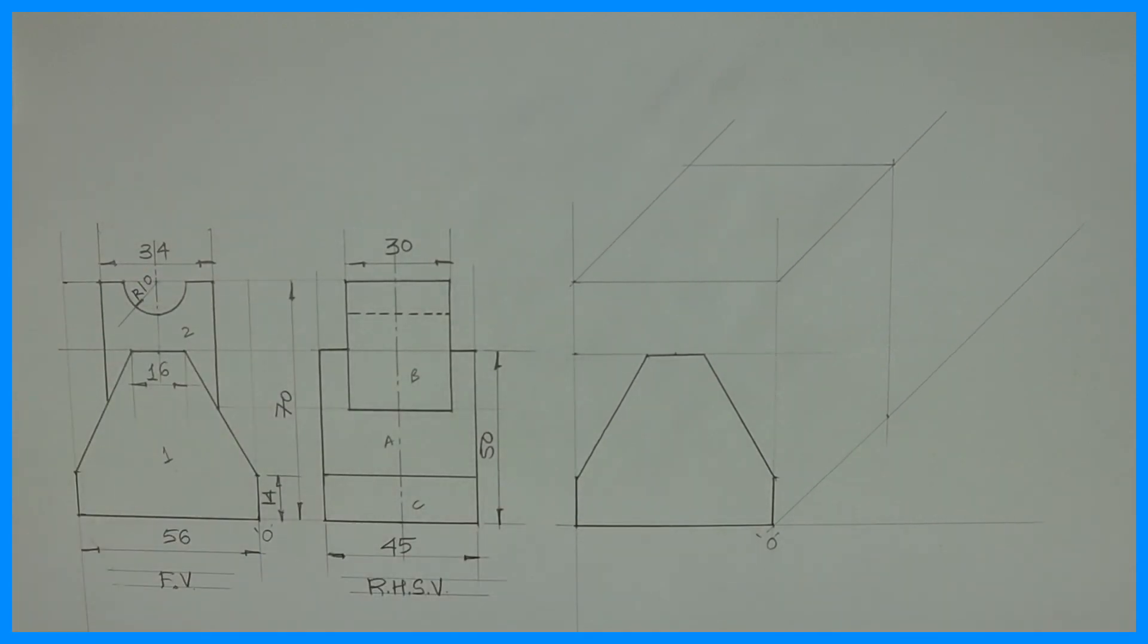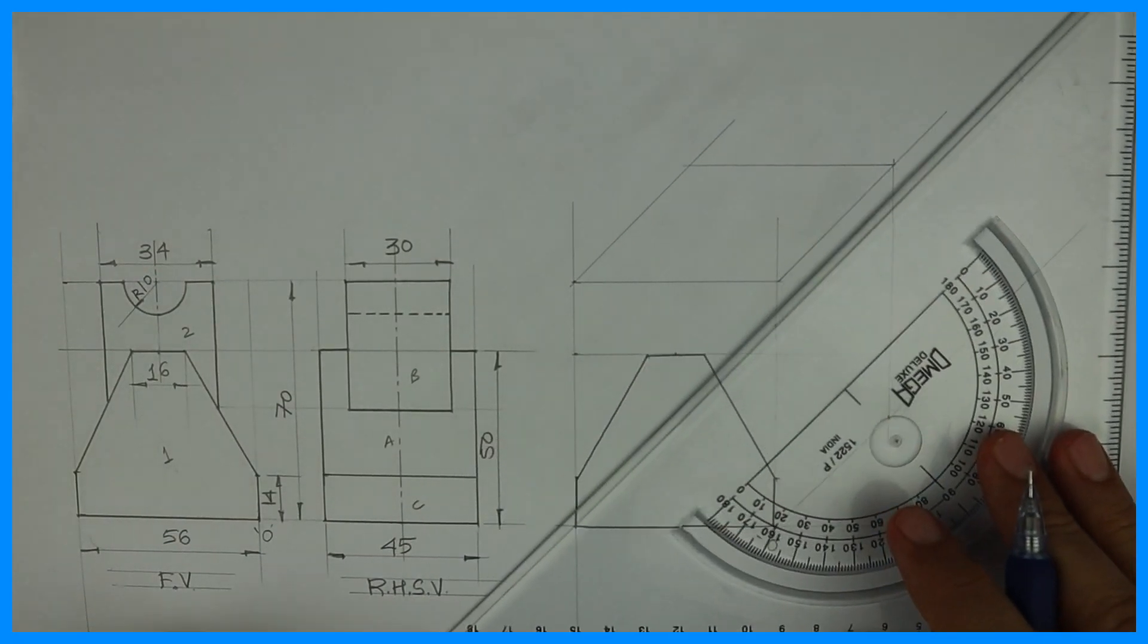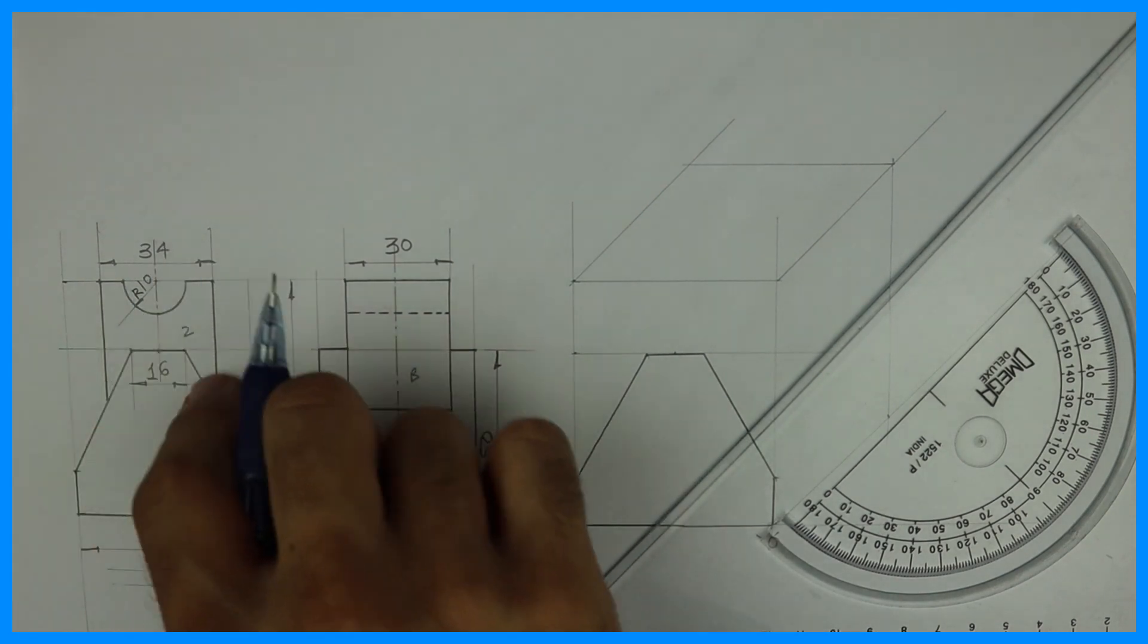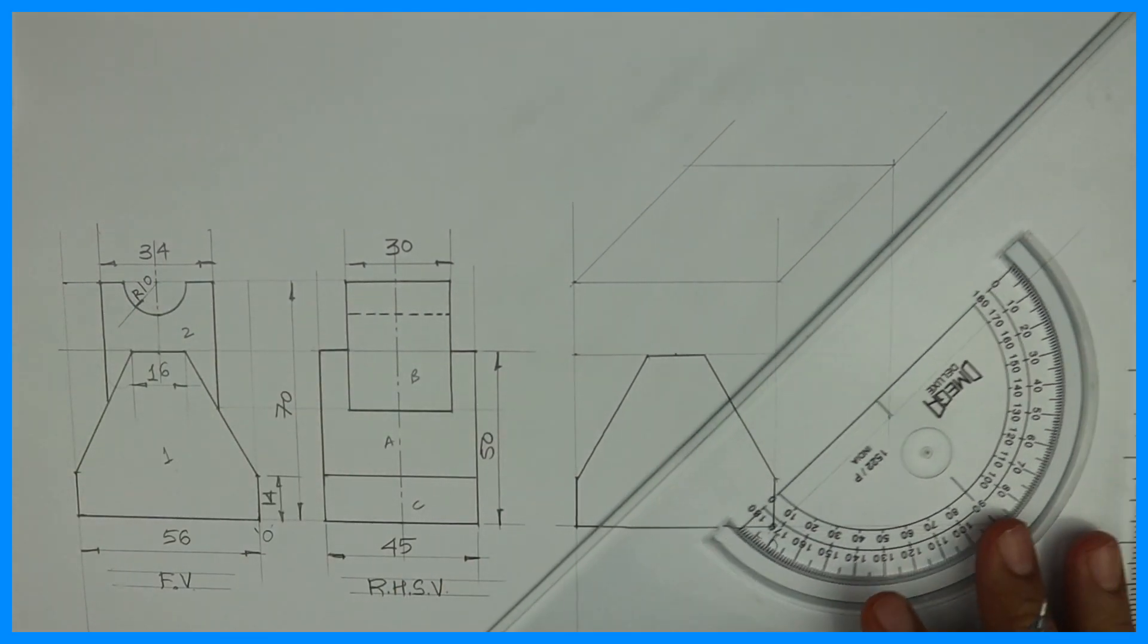So we got the first part. Now whatever is there in the front, the same thing is behind with that concept. So we'll take every point behind by 45.